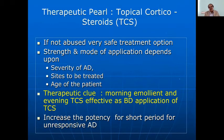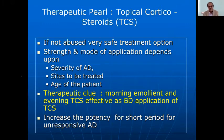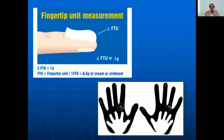As for topical corticosteroids, they should not be abused though they are a safe treatment option. Strength and mode of application depend upon severity and site. A therapeutic clue: use emollient in the morning and topical corticosteroid as a twice-daily application. If there is unresponsive atopic dermatitis after four to six weeks without desired effect, change to steroid-sparing agents.